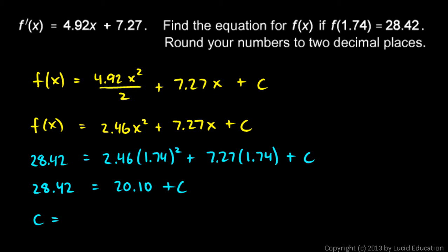So now we've solved for c. c has to be 28.42 minus 20.10. So c comes out to be 8.32.